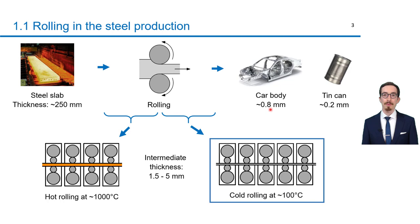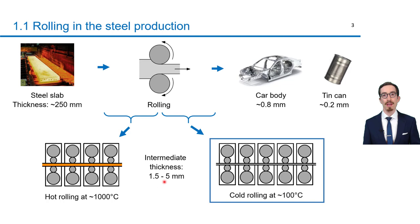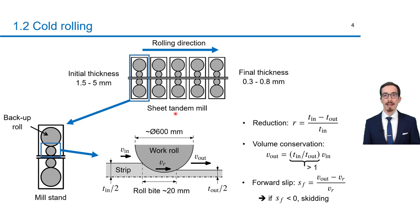Let's start with the context. To produce cars or packaging like tin cans, very thick steel slabs have to be reduced in thickness. Initially, these slabs are hot-rolled at about 1000 degrees Celsius since this temperature reduces the resistance of the material. Later on, when the strips become relatively thin, they are cold-rolled at about 100 degrees Celsius to satisfy very strict geometrical tolerances without significant surface oxidation. This presentation is focused on cold rolling.